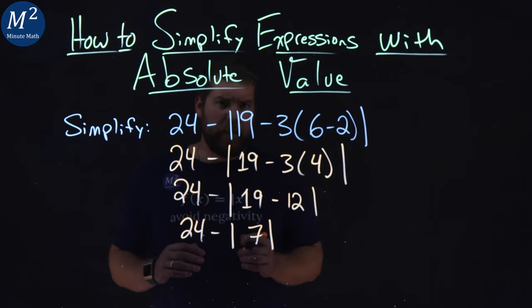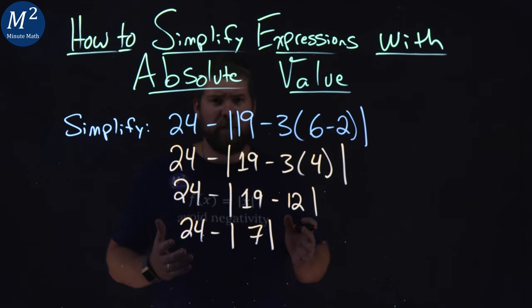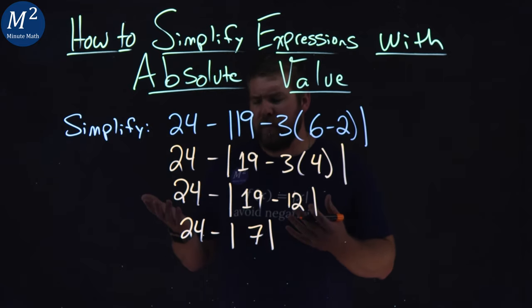Now, we need to take the absolute value of 7. We've brought it down to just that, and what does that mean? Absolute value of 7 is the distance that 7 is from 0, which is a positive 7.